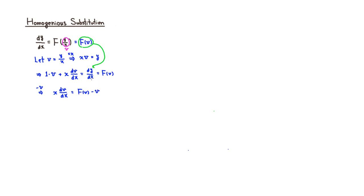You can see that we can put all the v's on one side and all the x's on one side. So this is going to be a separable equation. We know what to do from here. Let's look at an example.